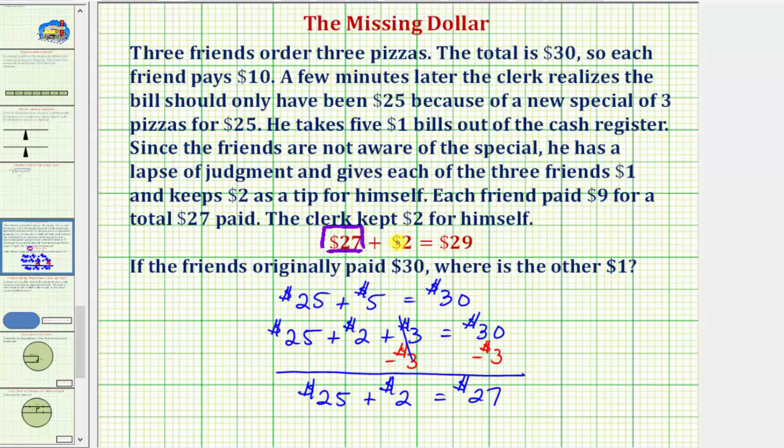And one last comment about this given equation here, if we did take the $27, which we now know is a total amount paid, and then instead of adding the tip of $2, if we subtract the $2 tip, notice how we get $25, which is the cost of the three pizzas.